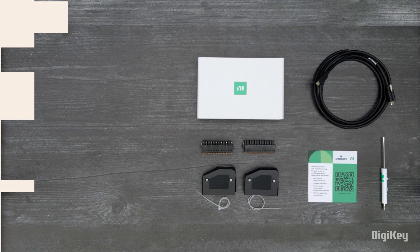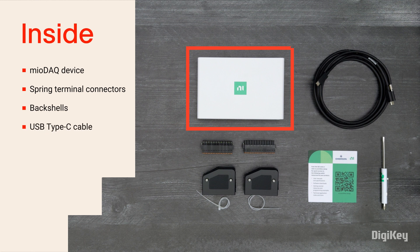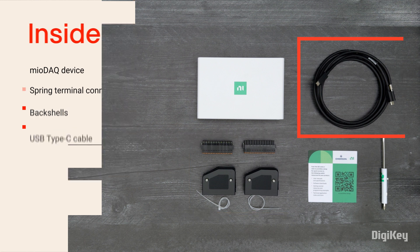Inside the box, you'll find the MEO DAC device with an accessory section that includes spring terminal connectors, back shells, and a USB Type-C cable.